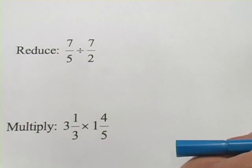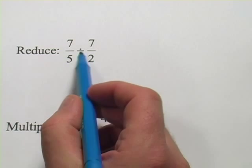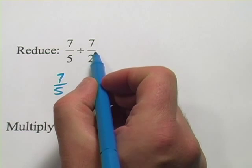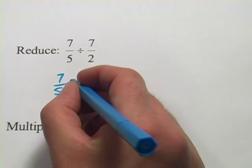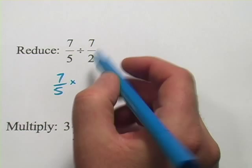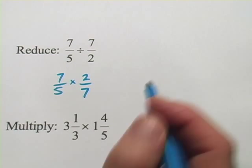This next one, we have a division problem. And remember, when you divide fractions, what you do is you change it into a multiplication problem by taking the reciprocal of the second one, which means you turn the fraction upside down. What's on the bottom goes on the top. What's on the top goes on the bottom. So instead of 7 halves here, we get 2 sevenths.